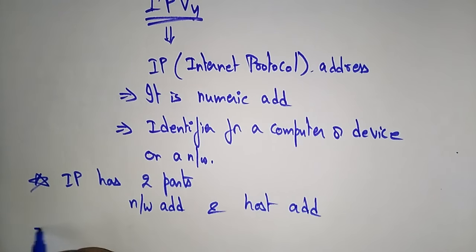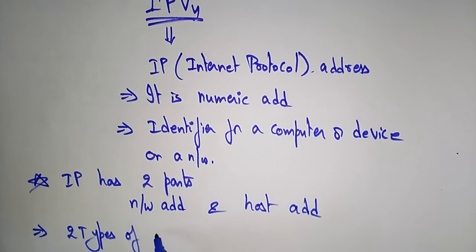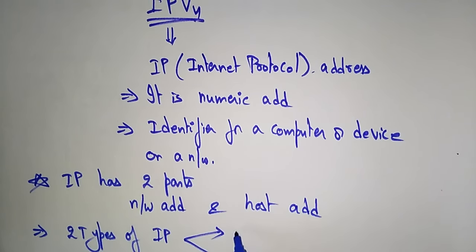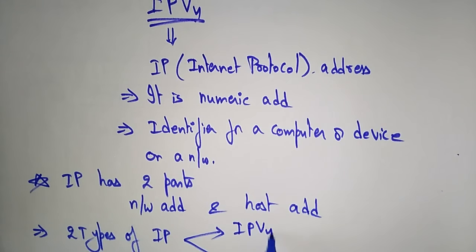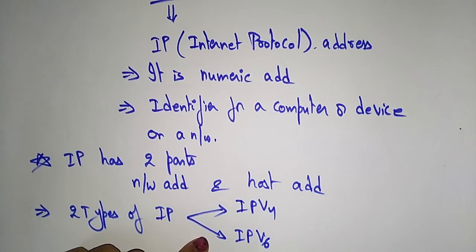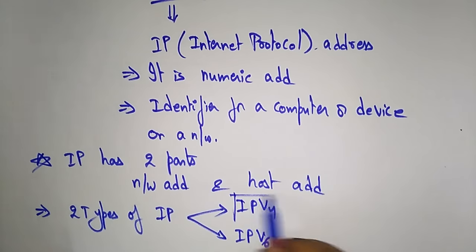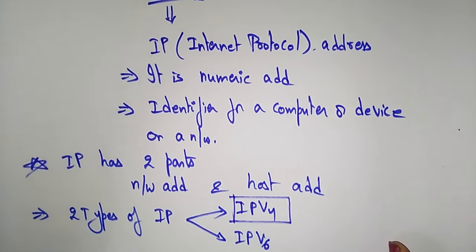There are two types of Internet Protocols: one is IPv4 and another is IPv6. That is Internet Protocol Version 4 and Internet Protocol Version 6. V4 is version 4 and V6 is version 6. Let's see what is this Internet Protocol Version 4.